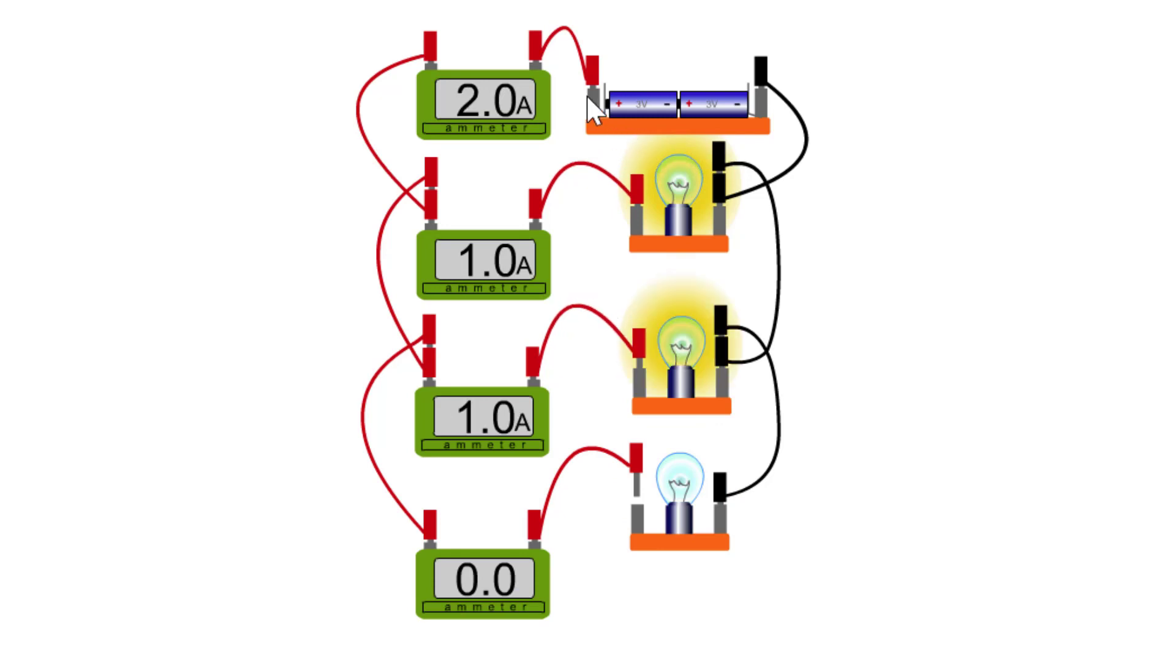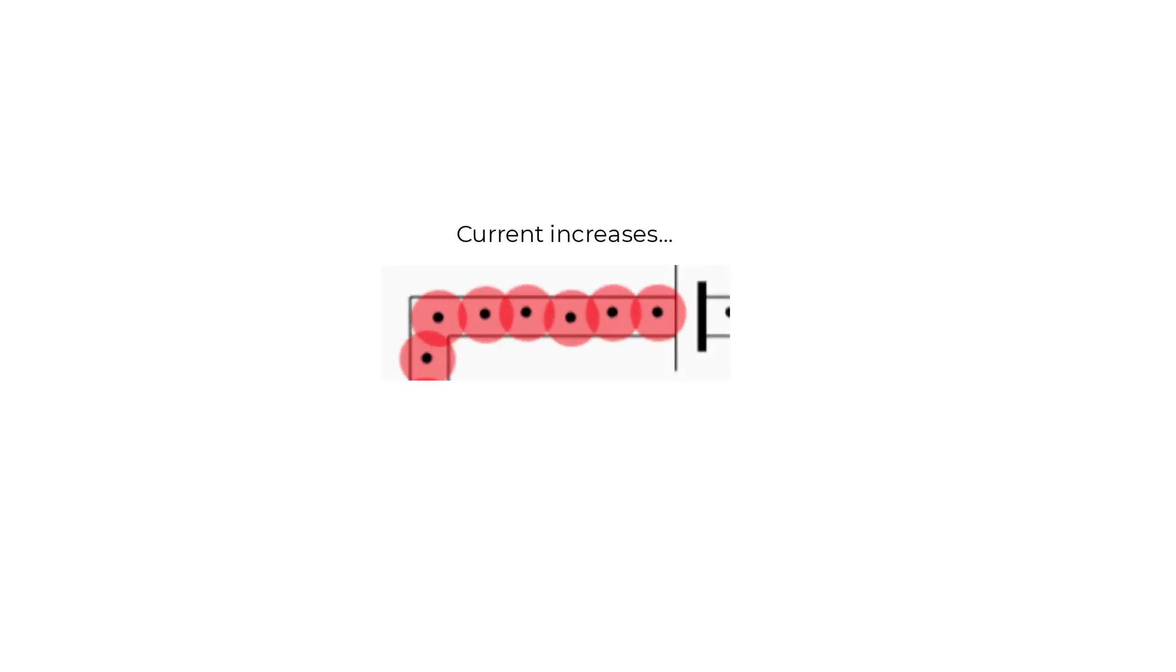So charges with energy are leaving the battery quicker and so the more bulbs that I make the battery run, the quicker the battery runs out of energy. In other words, the quicker the battery goes flat.